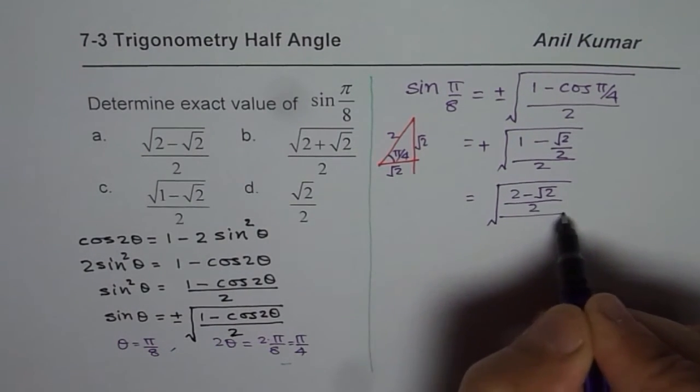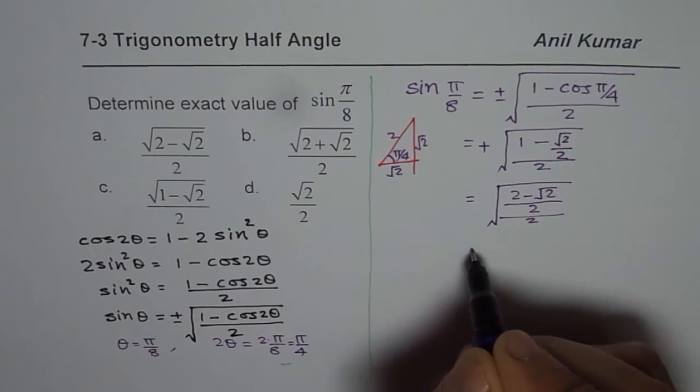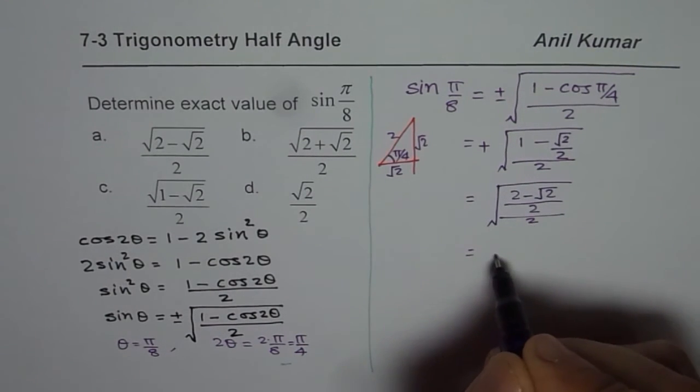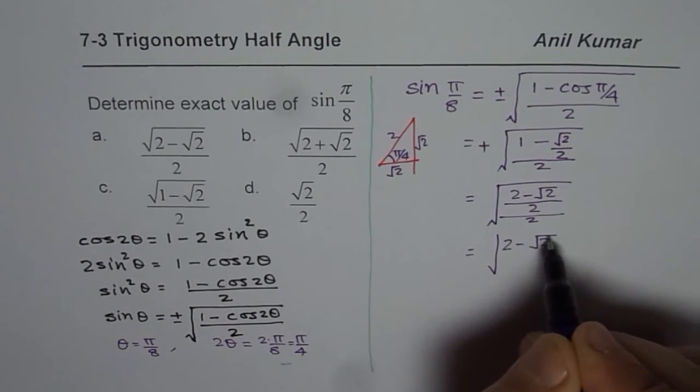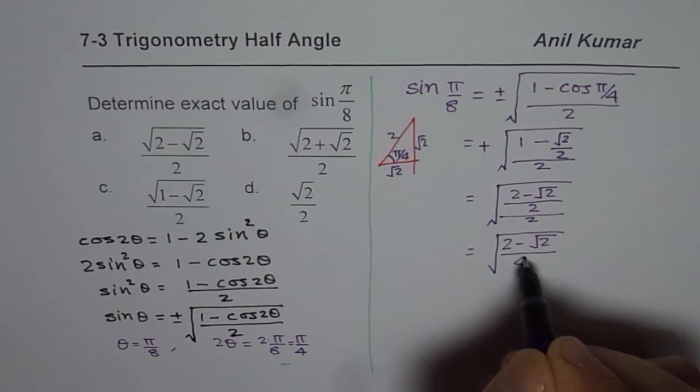Everything is within square root, so we can bring it down here, so we get 2 minus square root 2, divided by 4.